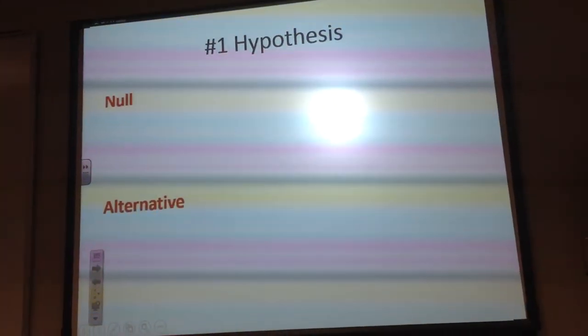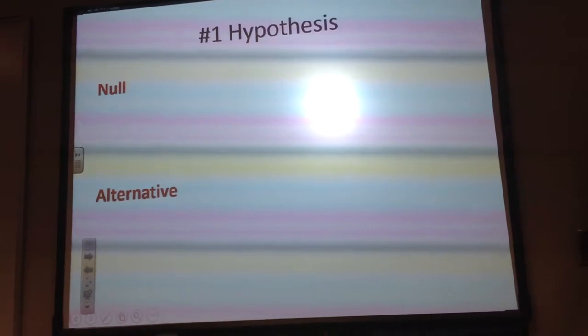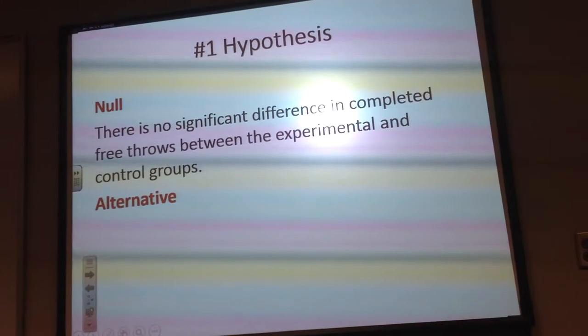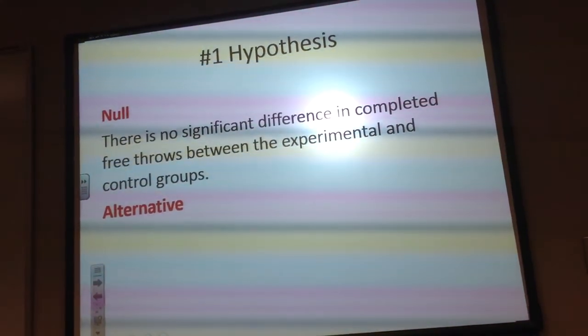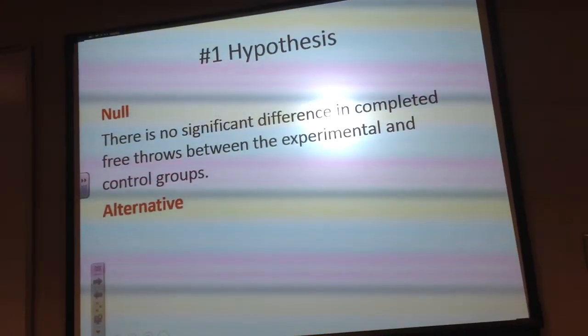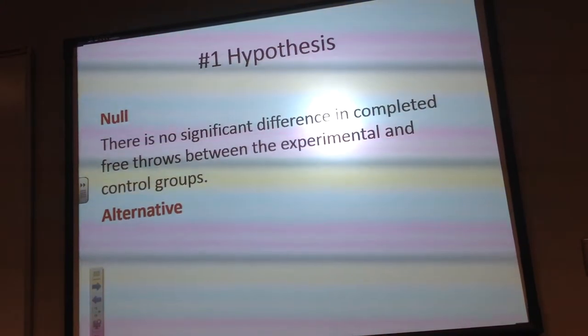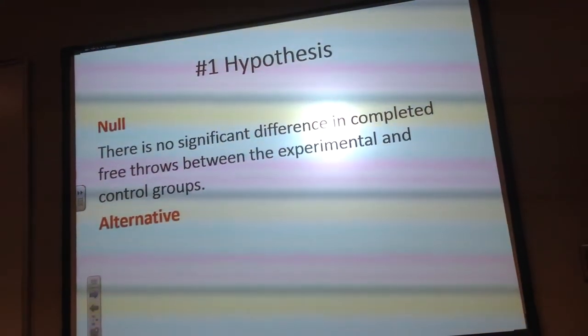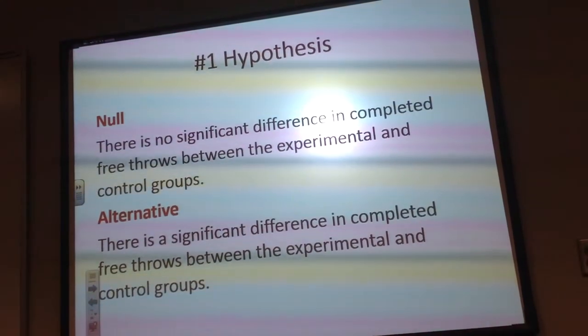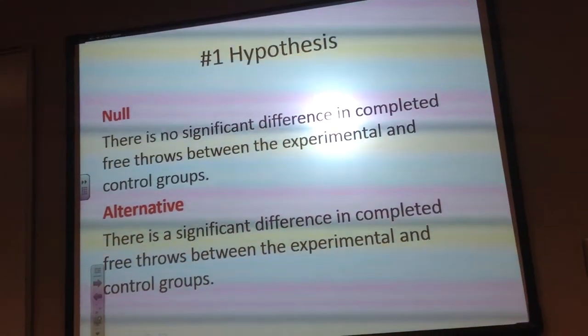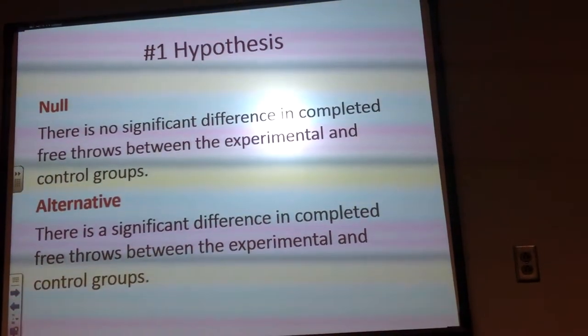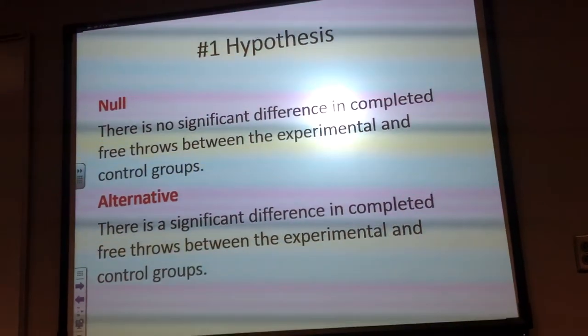So the hypothesis, null and alternative. Did we go over this? Yes? Okay, good. So my null hypothesis for my little experiment is there is no significant difference in the completed free throws between the two groups. Pretty simple, standard null hypothesis. So my alternative is that there is a significant difference. Again, very simple experimental design. So I have my null and my alternative.